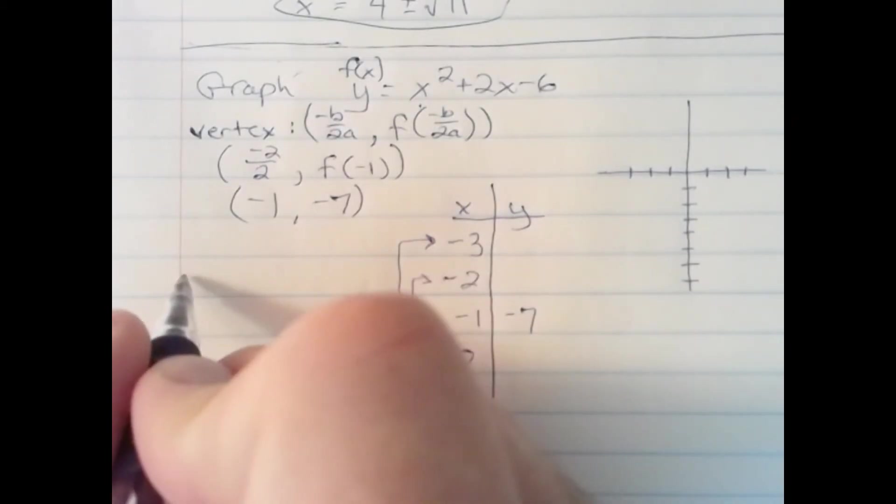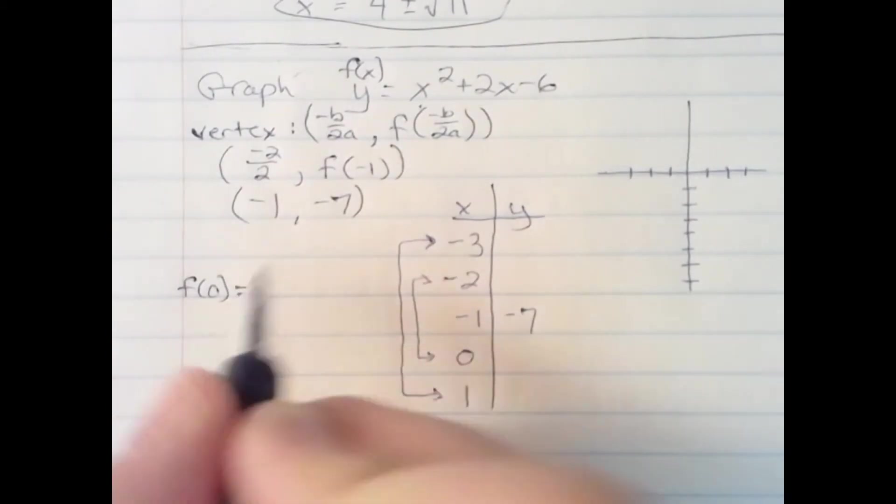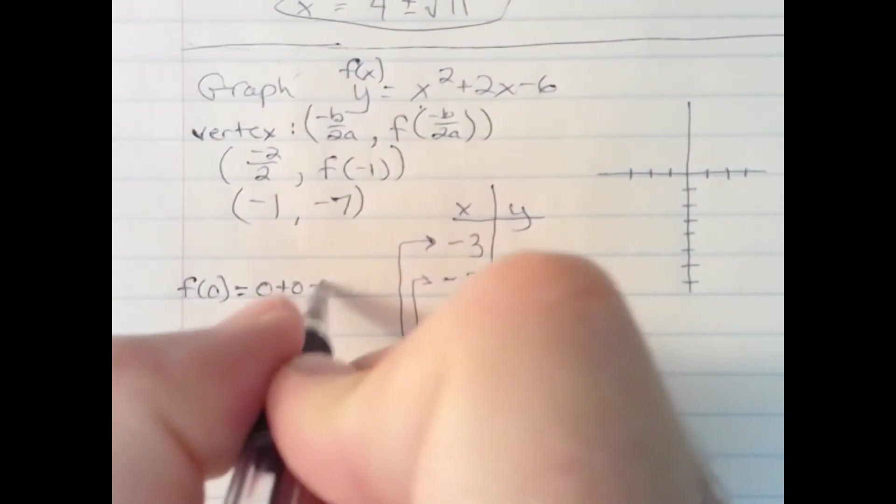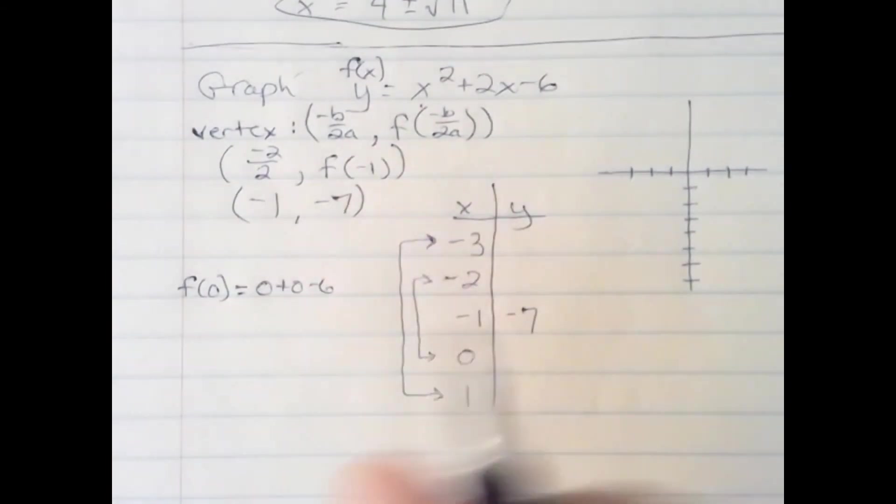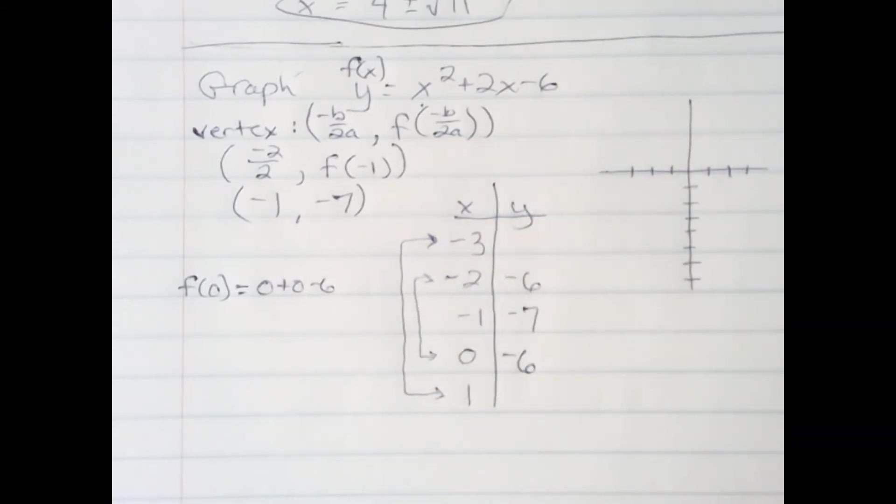Let's start out with f of 0. If I plug 0 into the original function, I would get 0 plus 0 minus 6. So my y-value would be a negative 6. Now, because of symmetry, I know if I plug in negative 2, I will also get a negative 6.